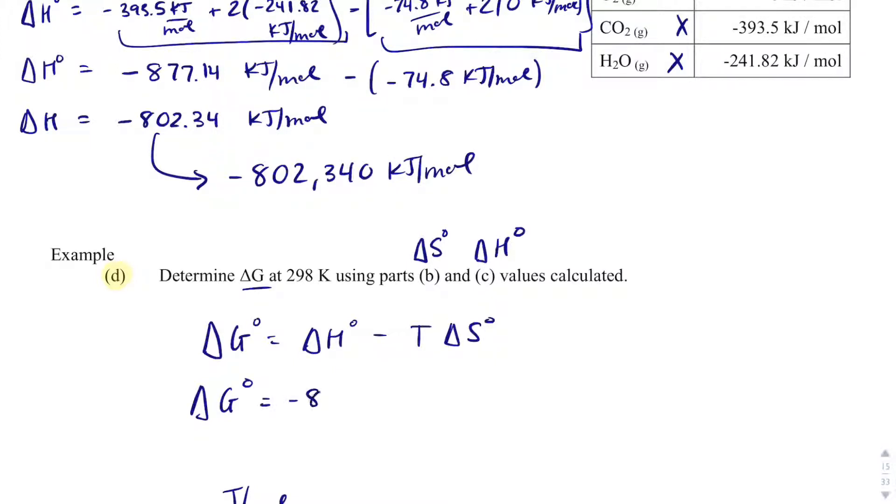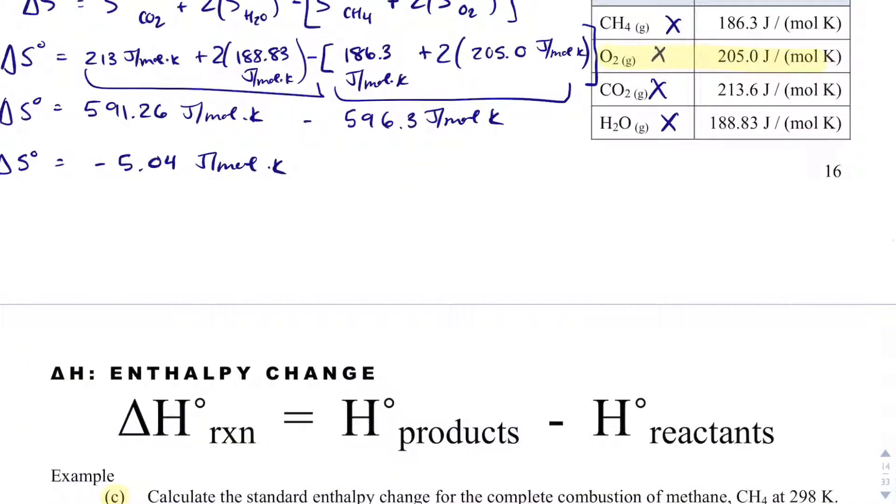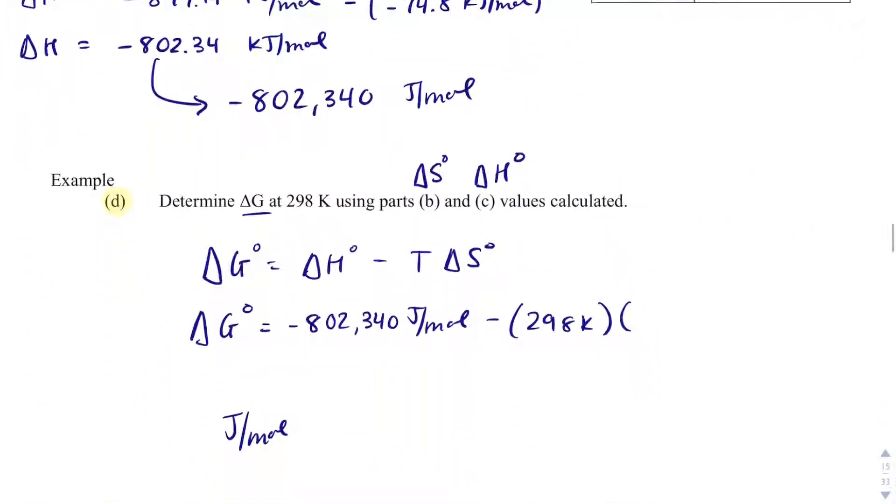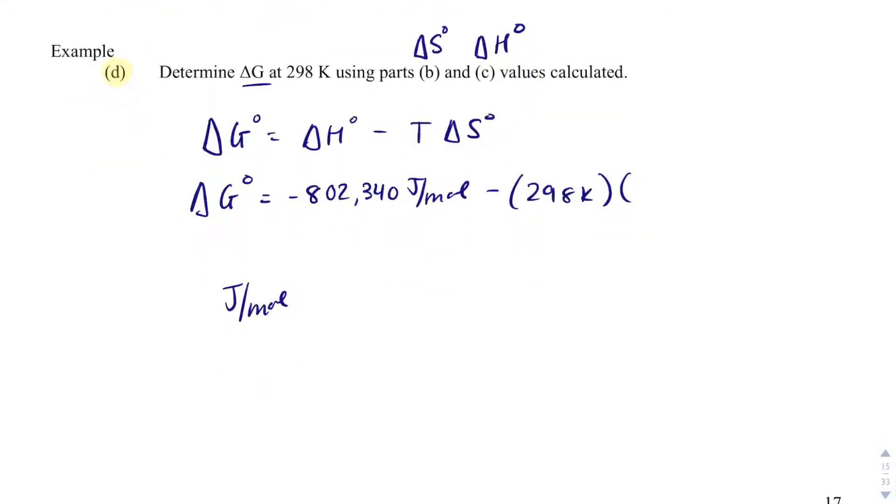So negative 802.340. And I just goofed on that. I meant joules per mole. We're going to subtract the temperature, which is 298 Kelvin. And then to get delta S, I'll have to slide up, and we had negative 5.04 joules per mole Kelvin. Now that everything is in joules like I need it, I can just math this out. And what I actually get is my delta G is equal to negative 8.01 times 10 to the 5th joules per mole.